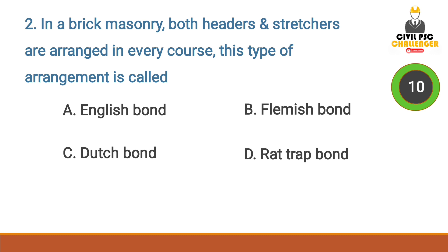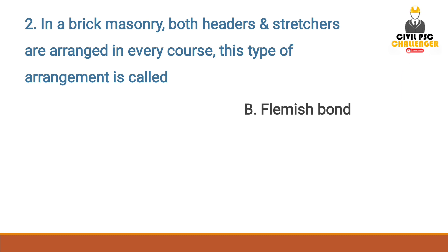Next question: In a brick masonry, both headers and stretchers are arranged in every course. This type of arrangement is called — Answer option B: Flemish Bond. In a brick masonry, both headers and stretchers are arranged in every course. This type of arrangement is called Flemish Bond.